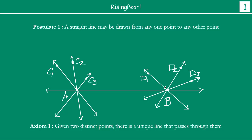This is a universal truth, so we call it an axiom: given two distinct points, there is only one unique line that passes through them. No matter which two points are given, this is the only straight line you can actually draw between any two given points. That was the first postulate.